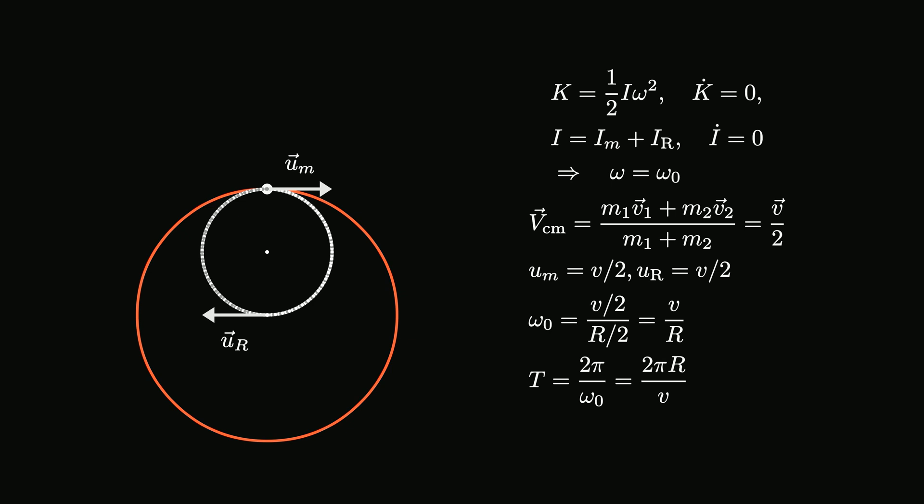One period of the rotation will put the point mass back to its initial position, which can be calculated directly using the found angular speed value.